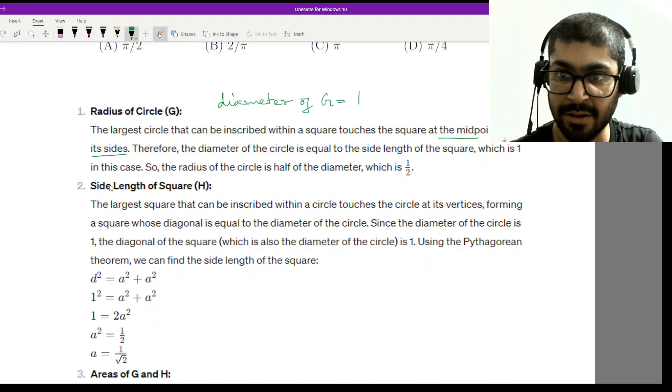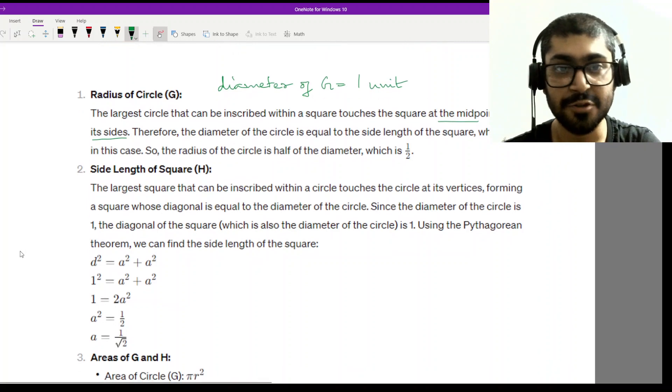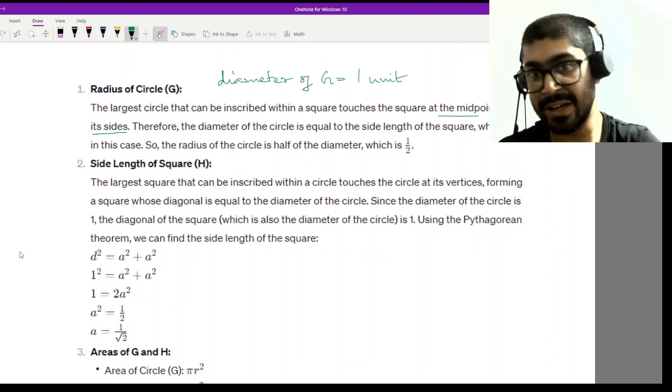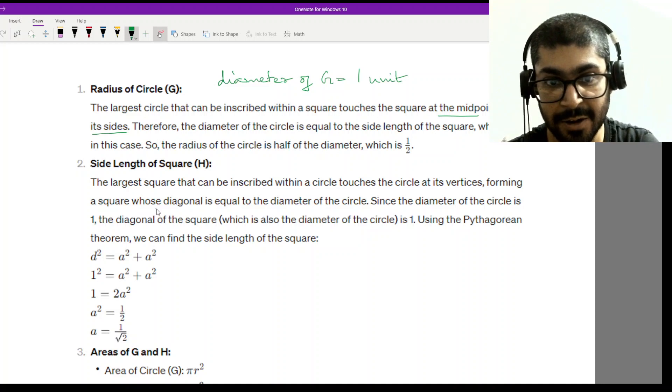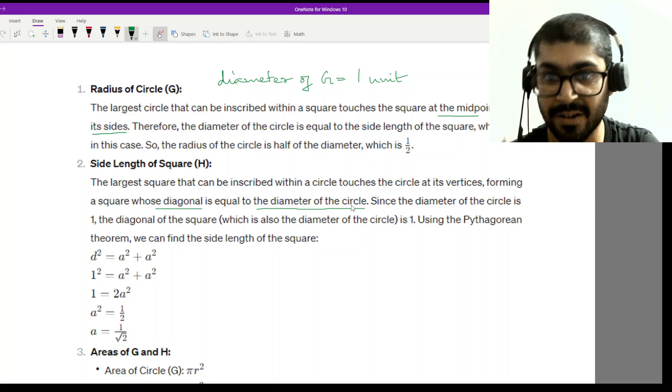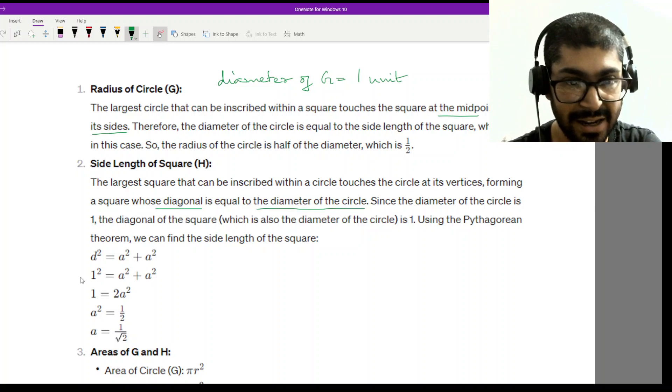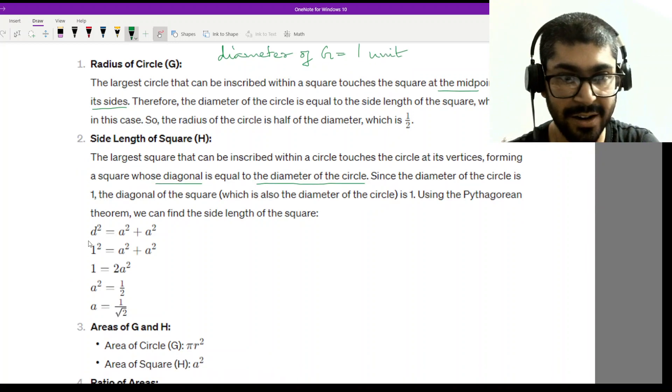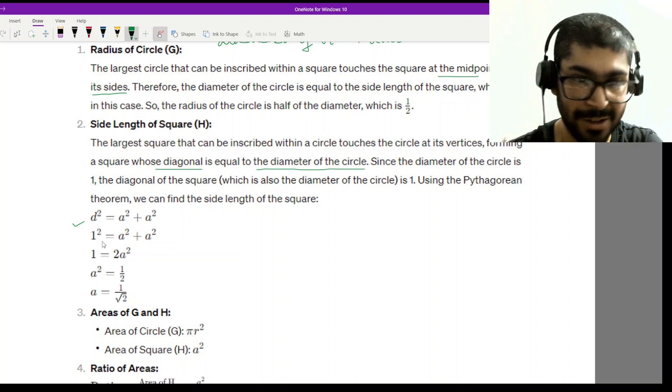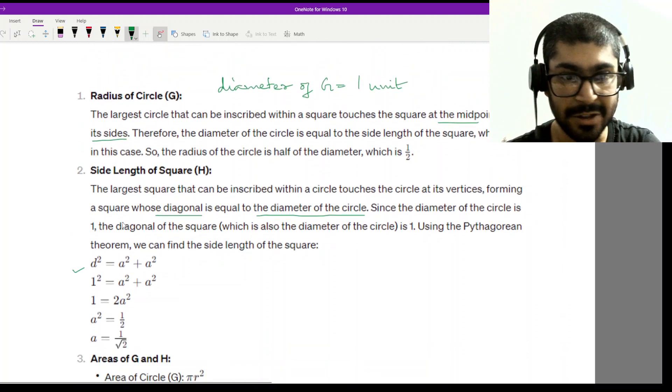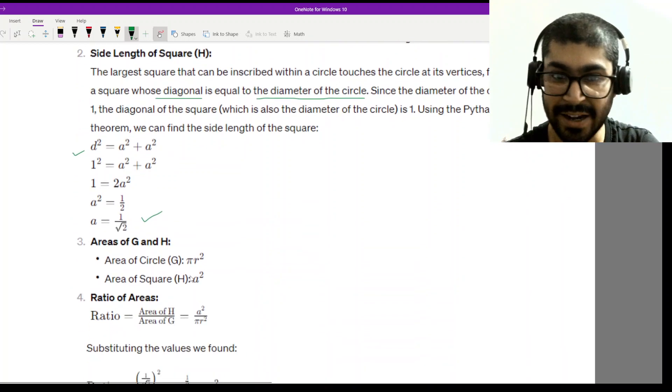Now, what will be the length of square H? Square H is placed inside the circle, so the diagonal of the square will be equal to the diameter of the circle. By the Pythagorean theorem, we can find the side length of the square. d² = a² + a², so 1² = a² + a². The side length will be 1/√2.